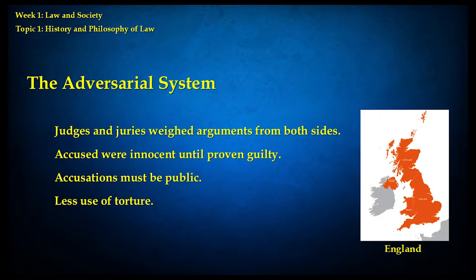Confessions weren't at the center of the English system, which is one reason witch killings weren't as common in England during the Renaissance period. The way you get witch killings is you torture someone until they confess to witchcraft, and they name someone else, and you torture that person, and it snowballs from there. If you have a system where there's less torture, that snowball doesn't get rolling quite so fast.